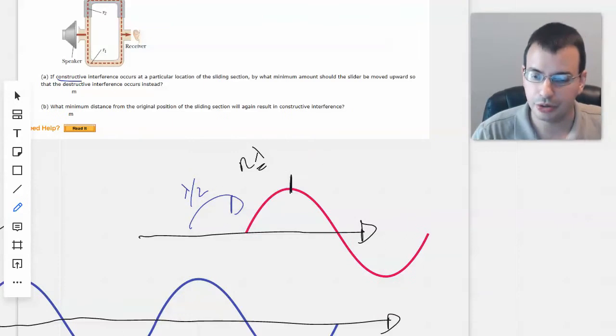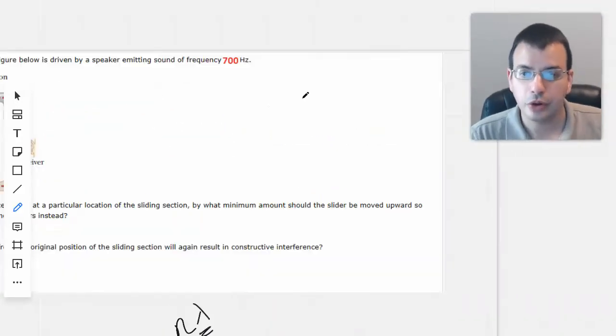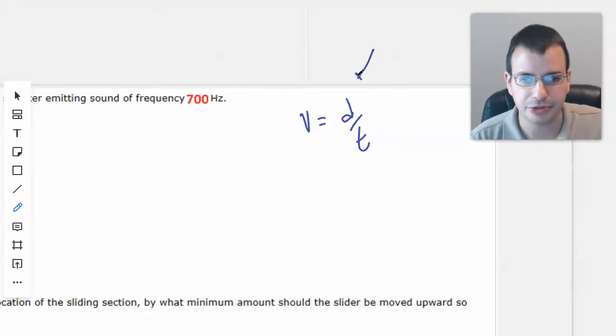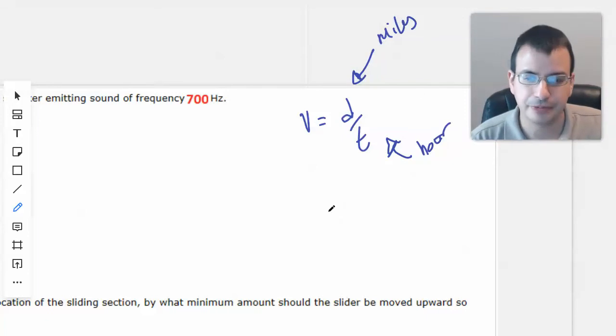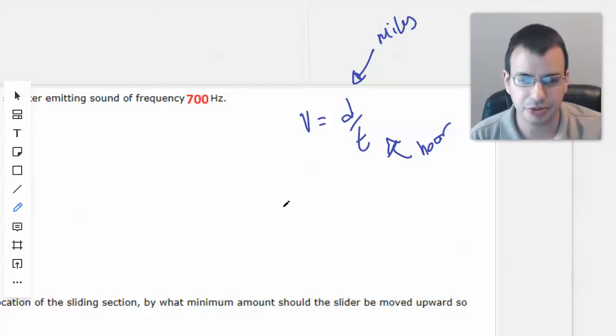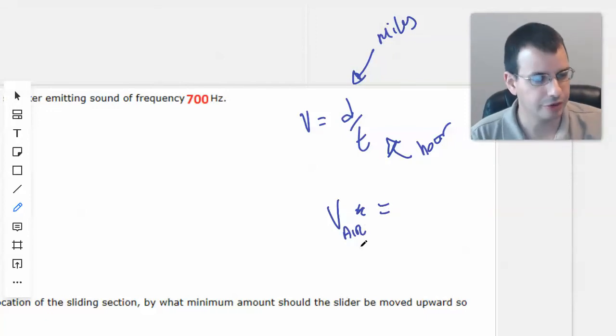So first thing we want to do is find out how big our wavelengths are. So I'm terrible at memorizing. I know velocity equals distance divided by time. And I know that because my car goes in miles per hour. This is just dimensional analysis. So velocity, well that's the speed of propagation. So that'll just be the speed in air of the wave.